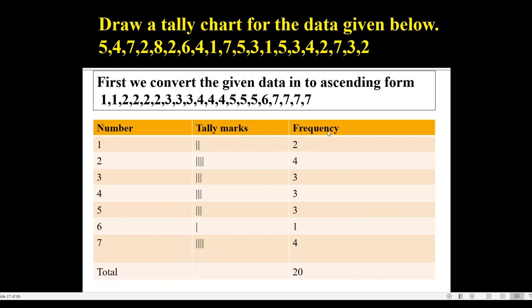Therefore, the corresponding frequencies are: 2 vertical lines for number 1, so the frequency of number 1 is 2. Frequency of number 2 is 4. Similarly, frequency of number 7 is 4, and the sum of all these frequency values is 20. That is, the sum of frequencies is 20. This is our discrete frequency distribution.